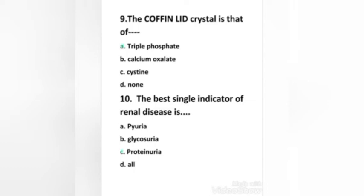The coffin-lid crystal is that of: triple phosphate, calcium oxalate, cysteine, or none. Right answer is option A, triple phosphate.